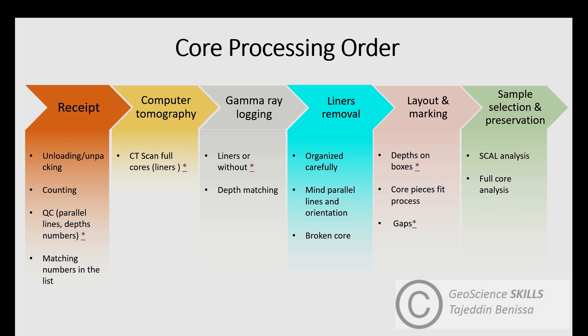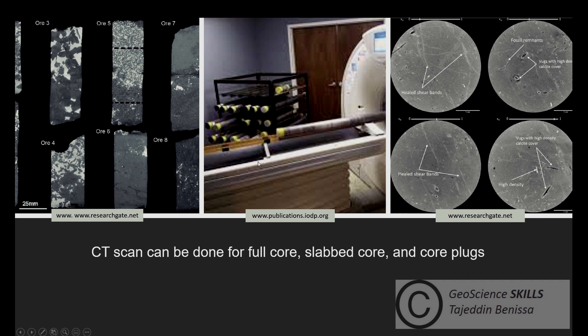Next is computer tomography, which is CT scanning. The objective is to carry out CT scan to detect any geological features that would impact core sample preparation process and analysis, such as fractures, high porosity, shale content, heterogeneity, etc. This process can be applied on cores with or without liners, based on company requirements and directions.